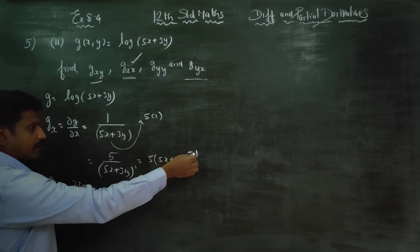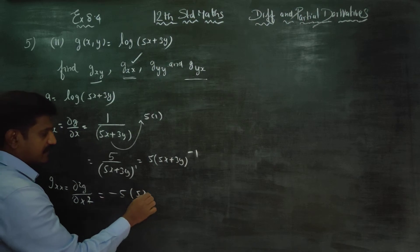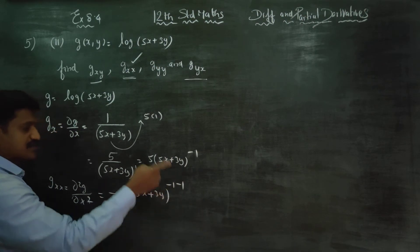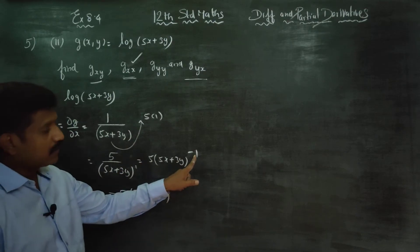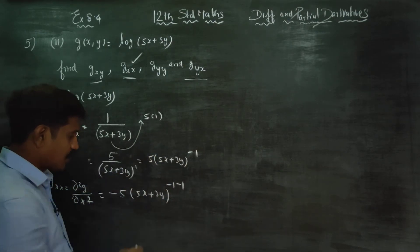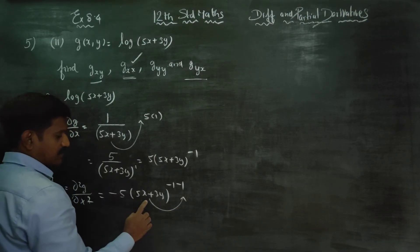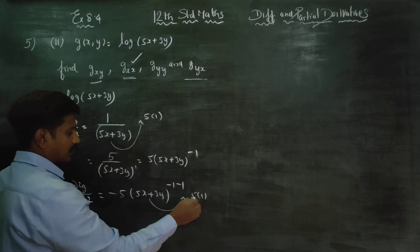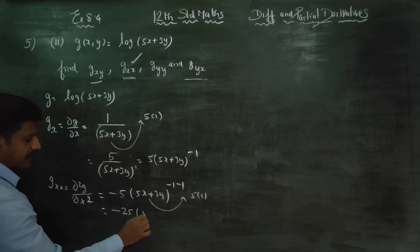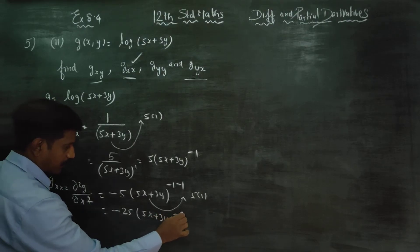Applying the power rule: minus 1 times 5 gives minus 5, then by chain rule differentiate (5x plus 3y), which gives 5 into 1. So minus 5 into 5 gives minus 25, and the power becomes minus 2. So (5x plus 3y) to the power minus 2.